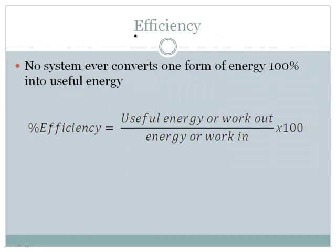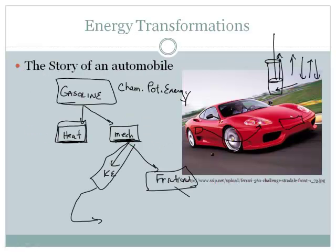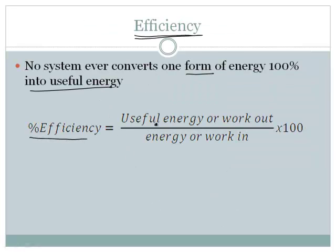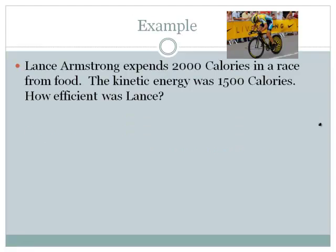That leads us to a very specific definition of something called efficiency. No system ever converts one form of energy 100% into useful energy. In the case of the car, that is the energy that causes it to just drive down the road. So there's an equation. The percent efficiency is the useful energy or work out divided by the energy or work in times 100. It's a pretty simple equation. Work out divided by work in times 100.